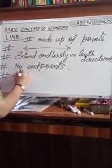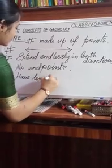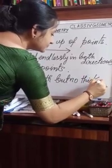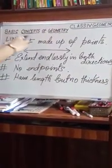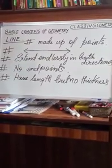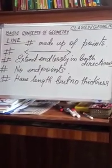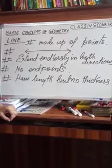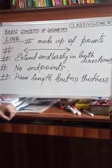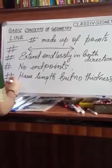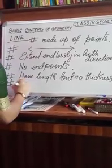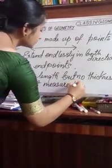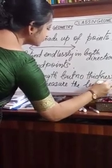Now, lines have length. But, no thickness. That means, no breadth. A line has a length. Remember, children. They have length. But, we cannot measure them. Because, how long they are going to extend, we do not know. They have a length. But, that is not specific. That is why, we cannot measure them.